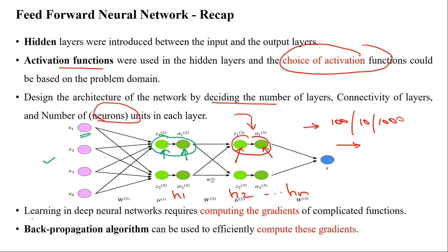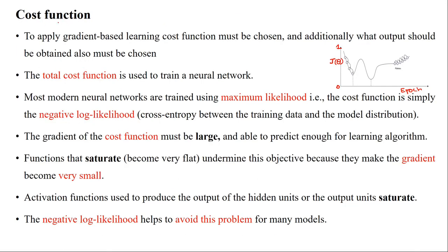For learning complex patterns using a neural network, gradients are needed for computing and reducing the cost for complicated functions. To calculate gradients and reduce the cost, we need the backpropagation algorithm. For calculating the gradient, we should first select the right cost function in gradient-based learning, and the desired output should also be considered.